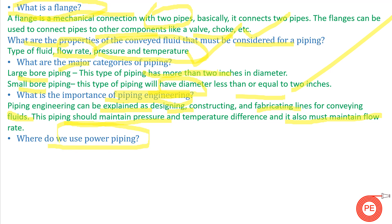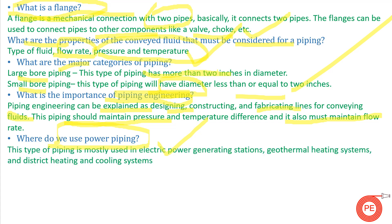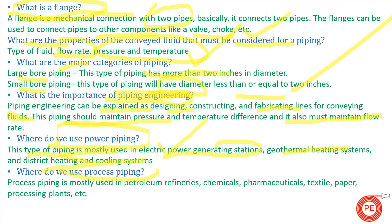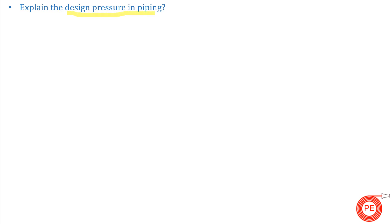Where do we use power piping? Power piping is mostly used in electric power generating stations, geothermal heating stations, and district heating and cooling systems. Where do we use process piping? Process piping is mostly used in petroleum refineries, chemical, pharmaceutical, textile, paper processing, steel plants, and other process industries.